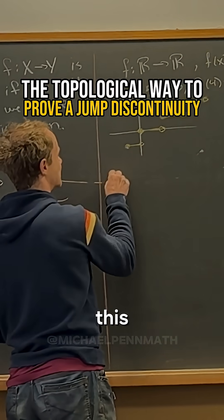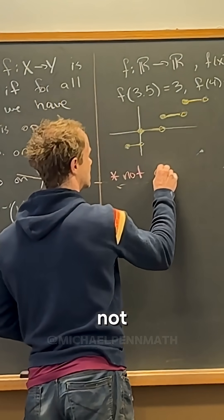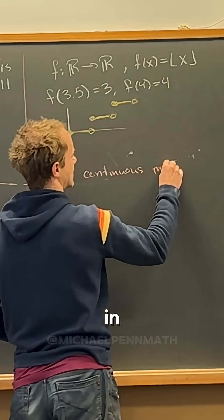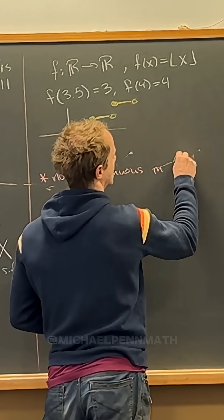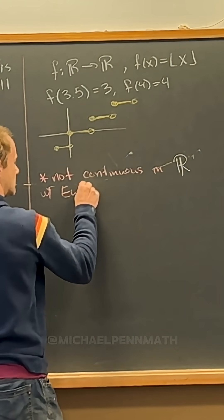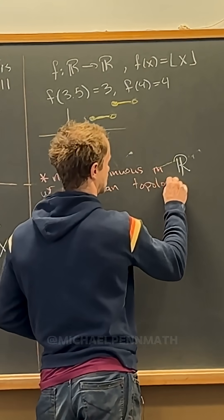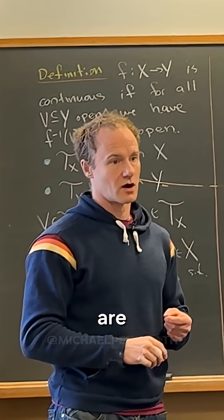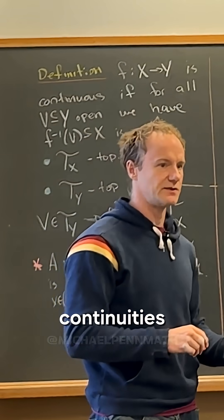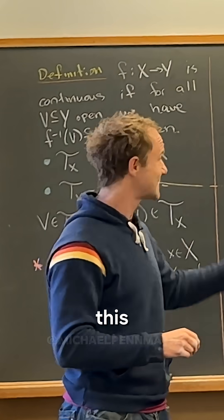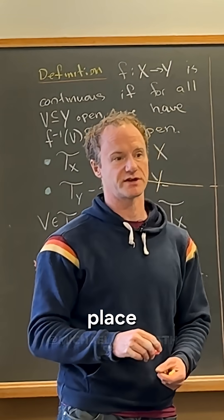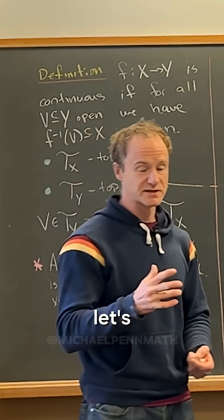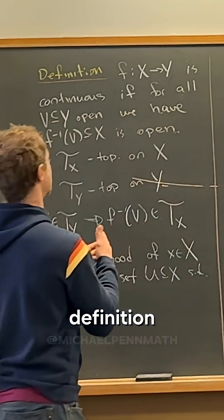We can all agree that this is not continuous in ℝ with the Euclidean topology. We're drilled on that in calculus and pre-calculus, because there are different types of continuities — infinite discontinuities, jump discontinuities, etc. This has jump discontinuities all over the place, so it can't be continuous in ℝ with the Euclidean topology. But let's prove that using the topological definition of continuity.